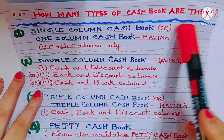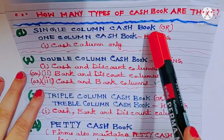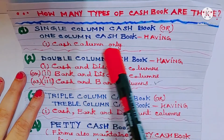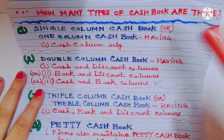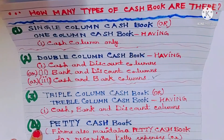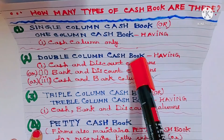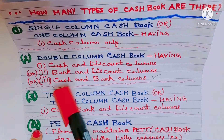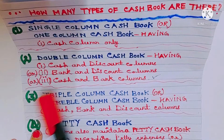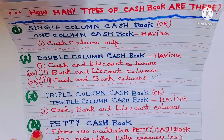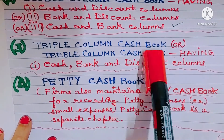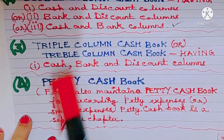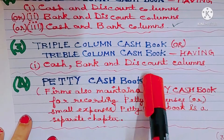There are four types of cash book. Number one: single column cash book or one column cash book — having a cash column only. Number two: double column cash book — which can have (a) one cash column and one discount column, (b) one bank column and one discount column, or (c) one cash column and one bank column. Number three: triple column or treble column cash book — having three columns: one cash column, one bank column, and one discount column.